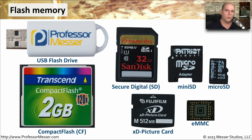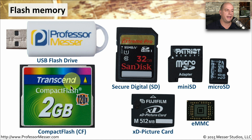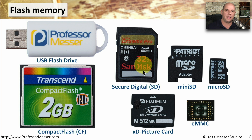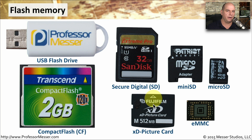There are many different kinds of flash drive formats. You're probably familiar with the USB flash drive format. One format that's been around for a number of years is the compact flash, or CF format — it's relatively large compared to the others. The secure digital, or SD card, is a popular format today, and there are different types: mini SD and micro SD, which you might find in small mobile phone devices. Some older digital cameras use an XD picture card format. And if you have a mobile phone or another mobile device, the flash memory inside is probably going to be eMMC memory.